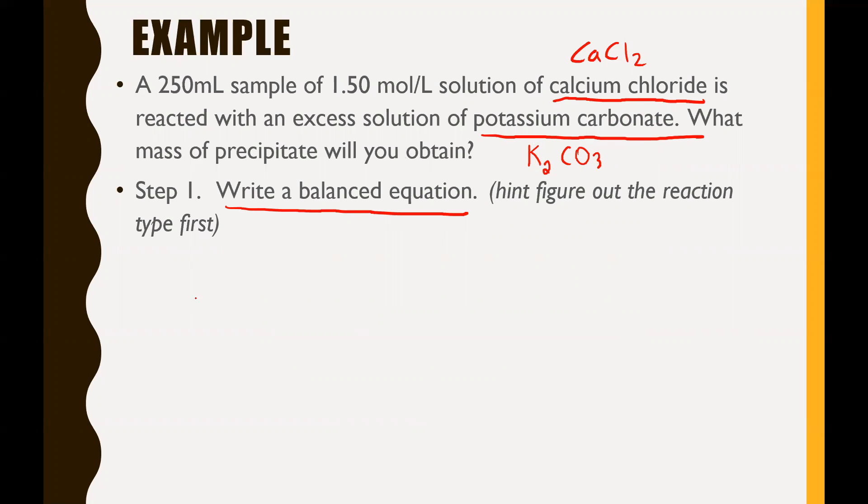So we'll write our balanced equation: CaCl2 plus K2CO3. It says figure out what reaction type you're dealing with. Because it's a compound plus another compound, it's probably going to be a double replacement reaction. In other words, calcium is going to go onto the carbonate and potassium is going to go on the chlorine.